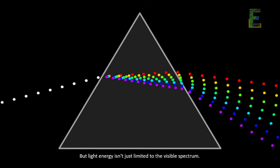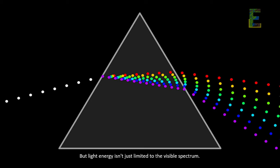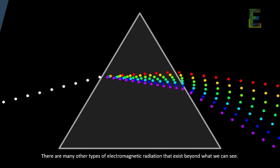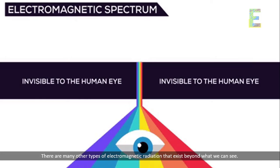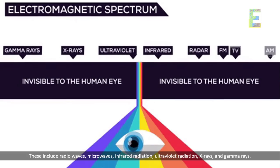But light energy isn't just limited to the visible spectrum. There are many other types of electromagnetic radiation that exist beyond what we can see. These include radio waves, microwaves, infrared radiation, ultraviolet radiation, x-rays, and gamma rays.